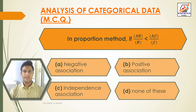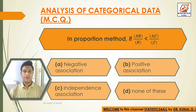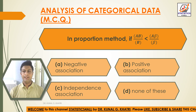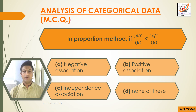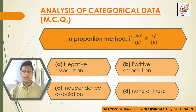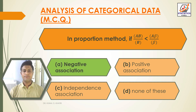Next question: in the proportion method, if AB divided by B is less than Aβ divided by β — options are: option A: negative association, option B: positive association, option C: independence association, option D: none of these. The answer is option A, that is negative association.